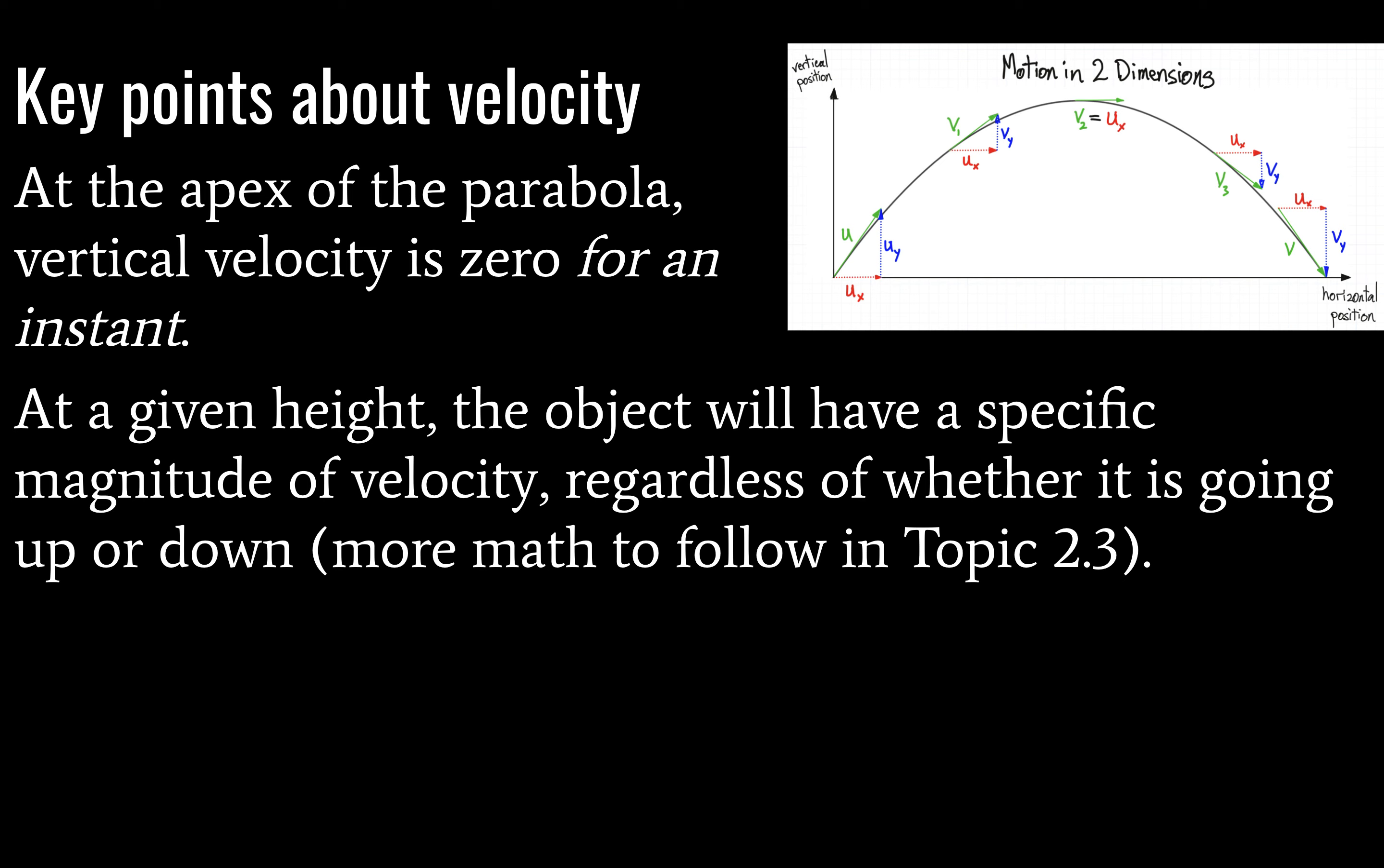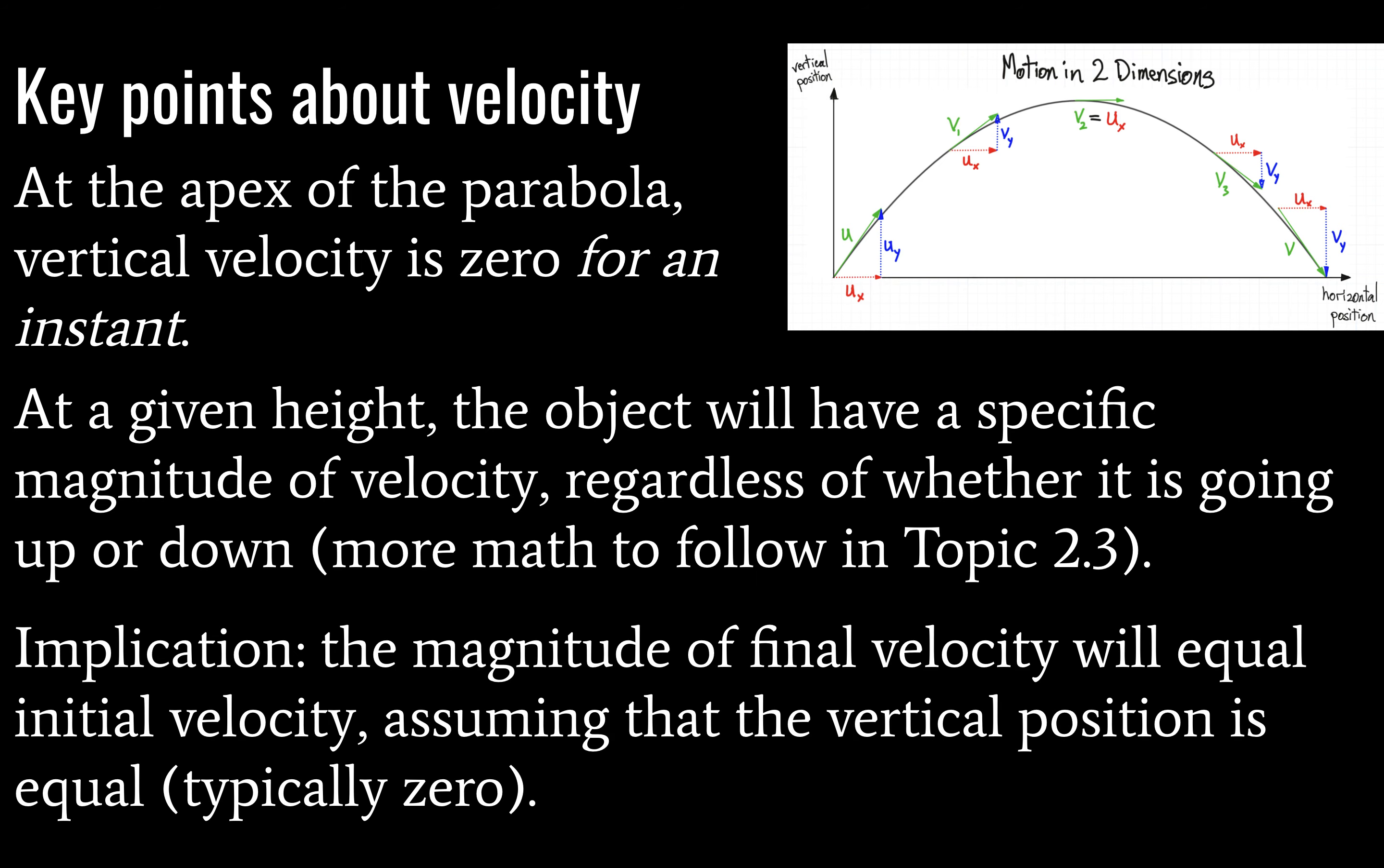So key point. At a given height, our velocity is going to have a specific magnitude, and it doesn't really matter if it's going up or down. And we will look at the math a little bit further in topic 2.3, specifically relating it to kinetic energy. But for right now, you just need to know that if the object is going up, the magnitude of velocity at a given height is going to be the same, whether it's going up or down.